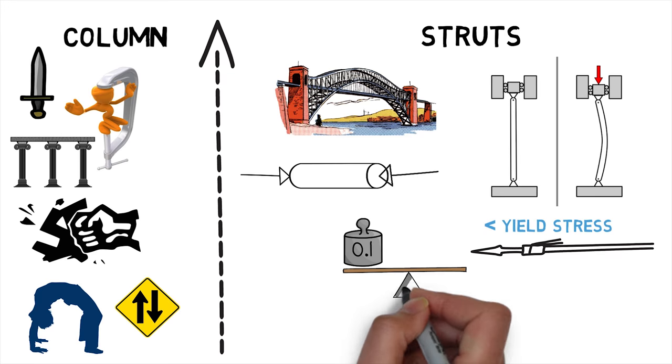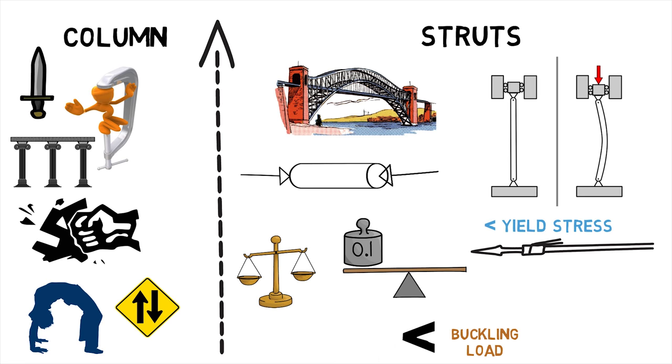As the name suggests, the minimum load at which buckling occurs is called buckling load. At values of load below the buckling load, a strut will be in stable equilibrium where the displacement caused by any lateral disturbance will be totally recovered when the disturbance is removed.